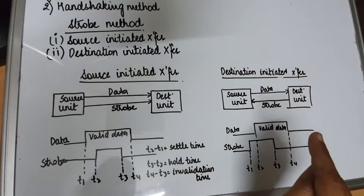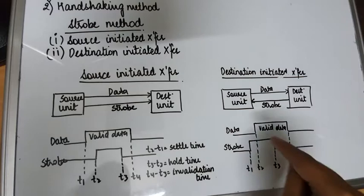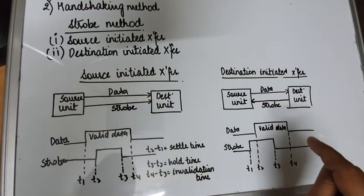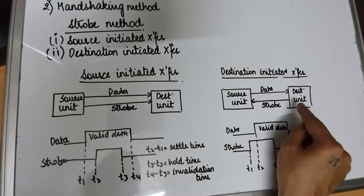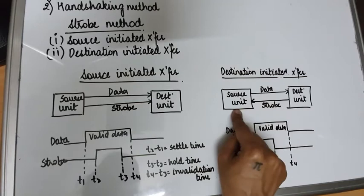From the timing diagram: the destination unit is ready for data transfer, so at time t1 it enables the strobe signal. After some settling time delta-t, at time t2, on sensing the strobe signal — which was generated by the destination unit — the source unit senses the signal.